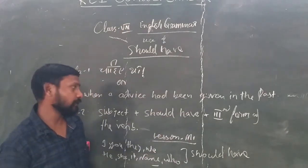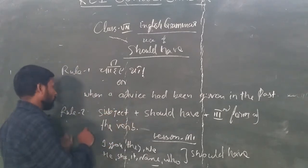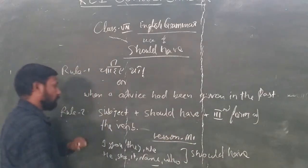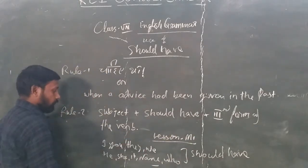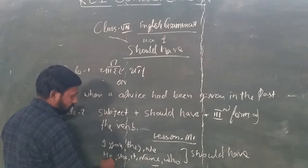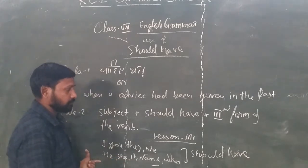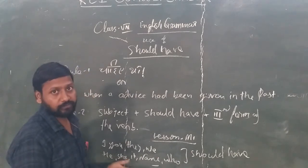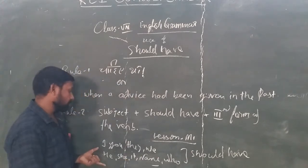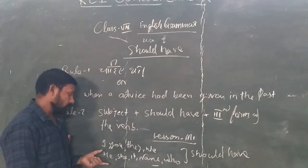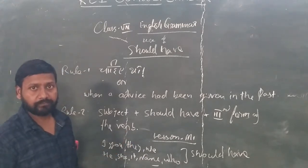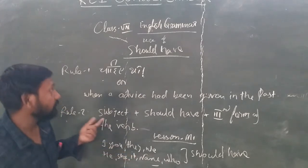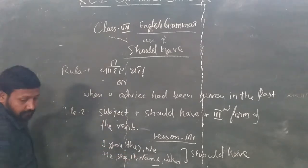So the structure required is: subject + should have + the third form of the verb. With all subjects — you, we, she, he, they — 'should have' will be used. There is no change according to the subject. Whatever the subject is, we will use 'should have'. This is a very interesting thing. Let's see some examples for better understanding.